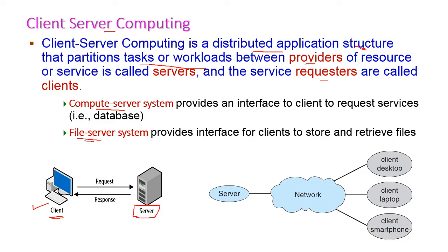A compute server system provides an interface for clients to request services such as infrastructure services, application services, platform services, or database services. The server provides the service through a response. A file server system provides an interface for clients to store and retrieve files. In a client-server system, there may be a single server with many clients accessing it through a network.